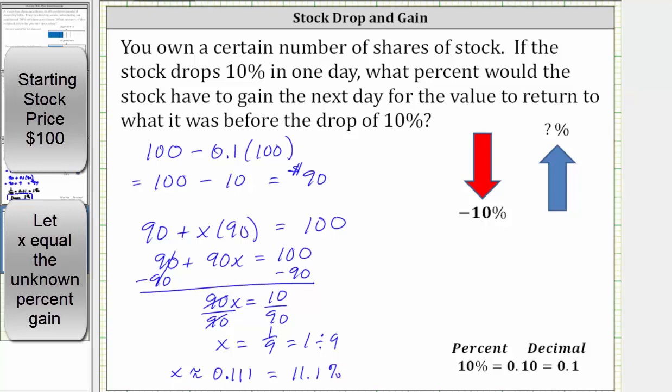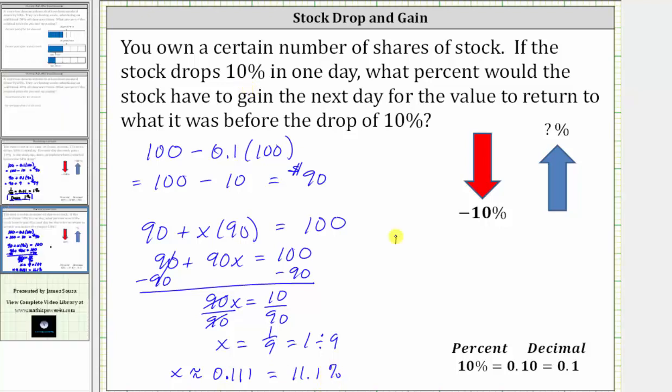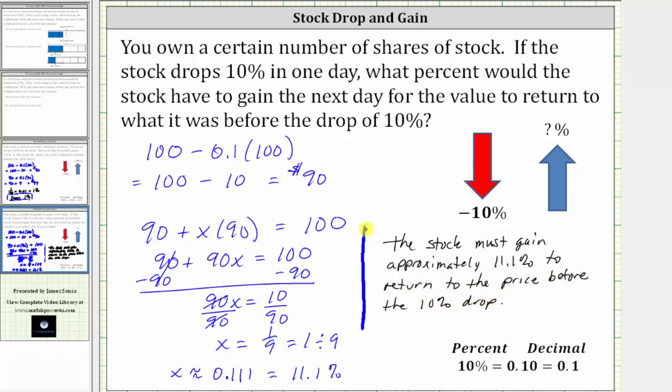So now we know the stock must gain approximately 11.1% to return to the same price before the 10% drop. And it is important to recognize that while we did use a starting stock price of $100, it would not matter what stock price we started with, the gain would still have to be 11.1% in order to return to the original stock price before the 10% drop. I hope you found this helpful.